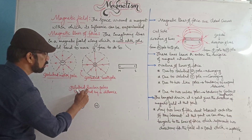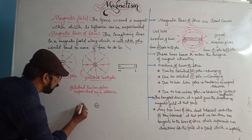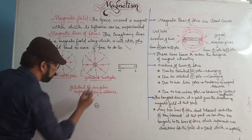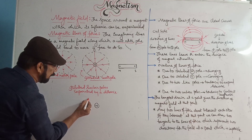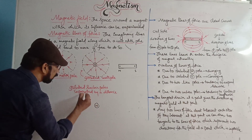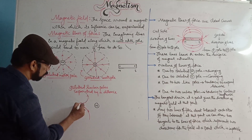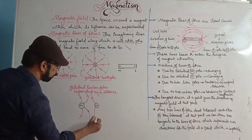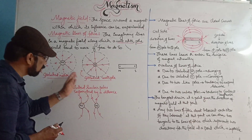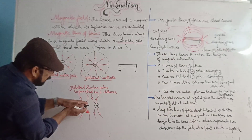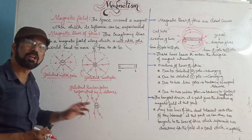Now, if you take isolated similar poles separated by a certain distance, and you place the unit north pole here, it is repelled by this pole, so it will try to move along a straight line. But it is also under the influence of the other pole. Hence it will try to bend and move sideways. The lines of force have a tendency to bend sideways, which indicates repulsion between these two like poles.